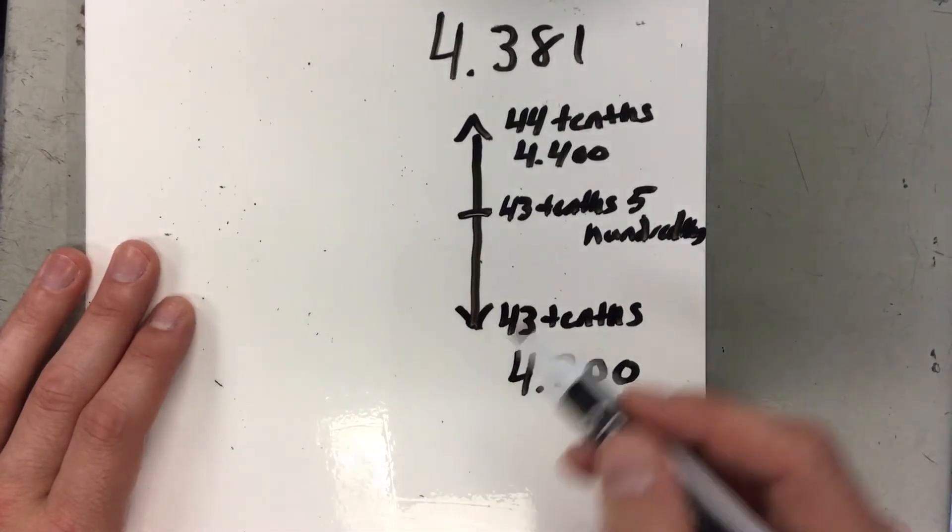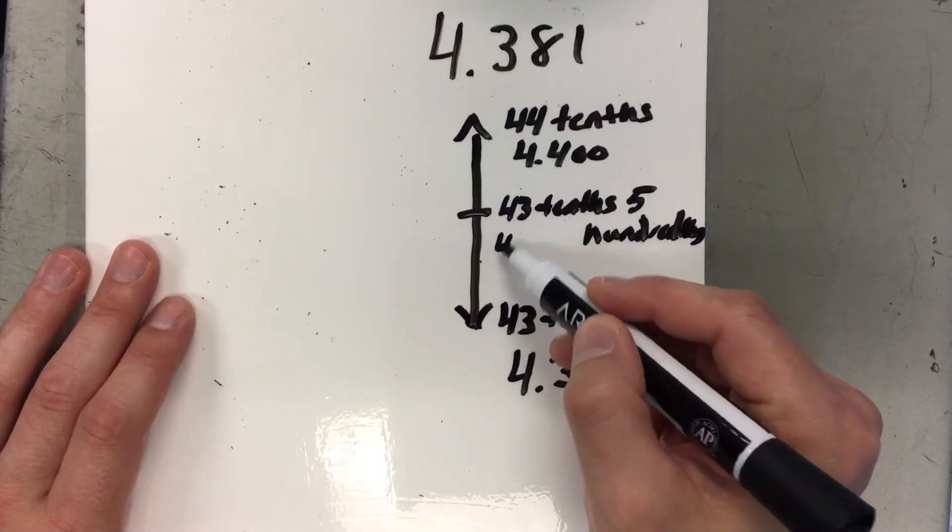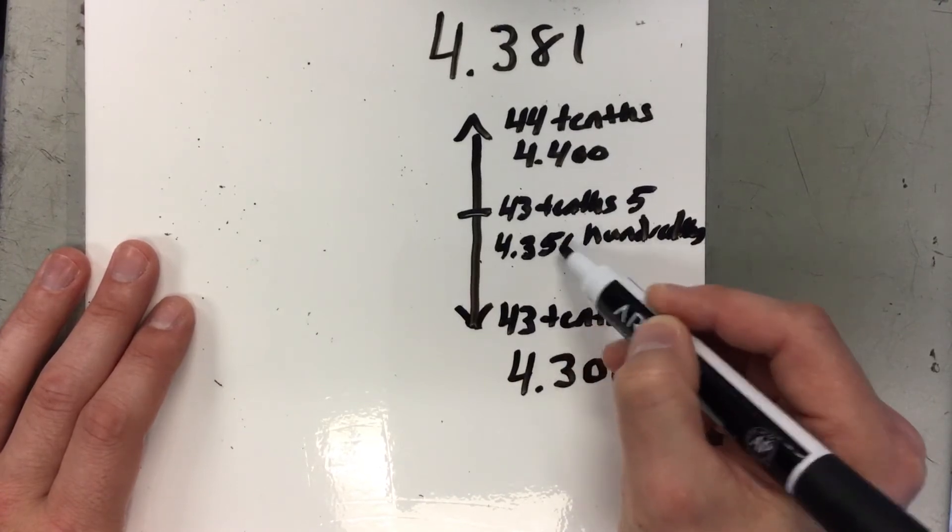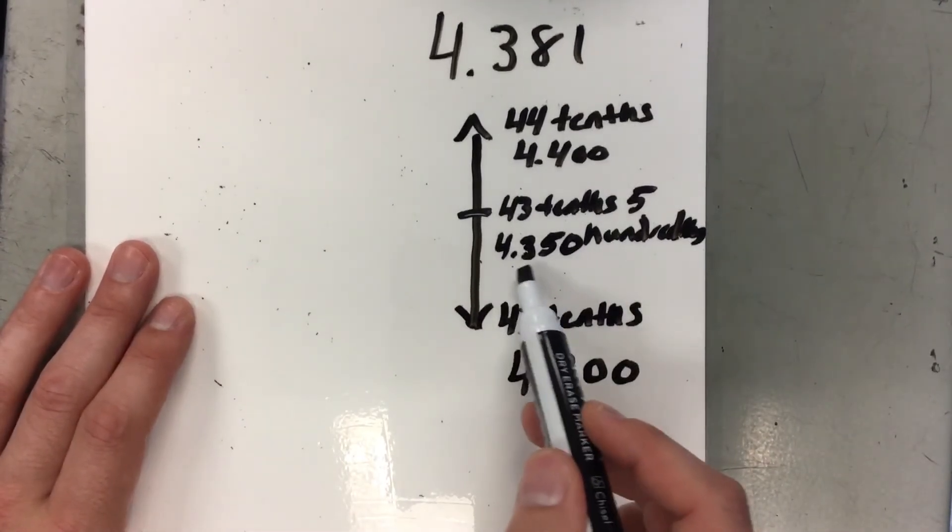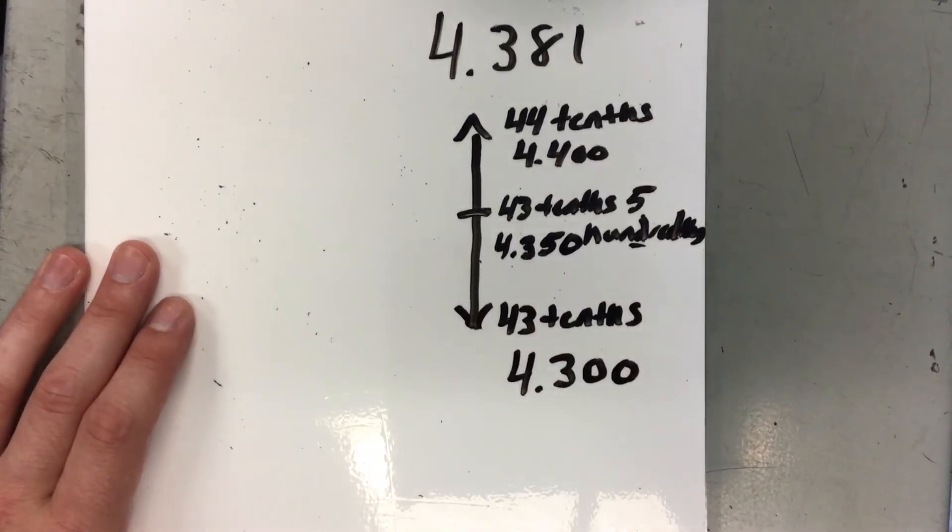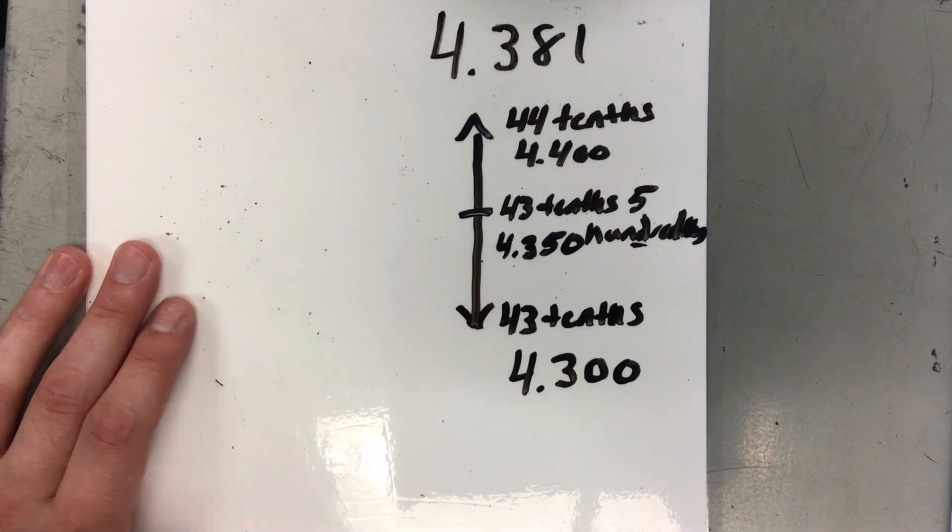So what would that look like? That would look like 4.350. So you see I have my 43 tenths, my 5 hundredths, and then I have a zero for my thousandths place.